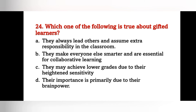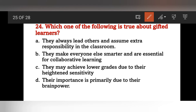Which of the following is true about gifted learners? They always lead others and assume extra responsibility, they make everyone smarter and are essential for collaborative learning, they may achieve lower grades due to their heightened sensitivity, or their importance is primarily due to brain power? The answer is C — they may achieve lower grades due to their heightened sensitivity.